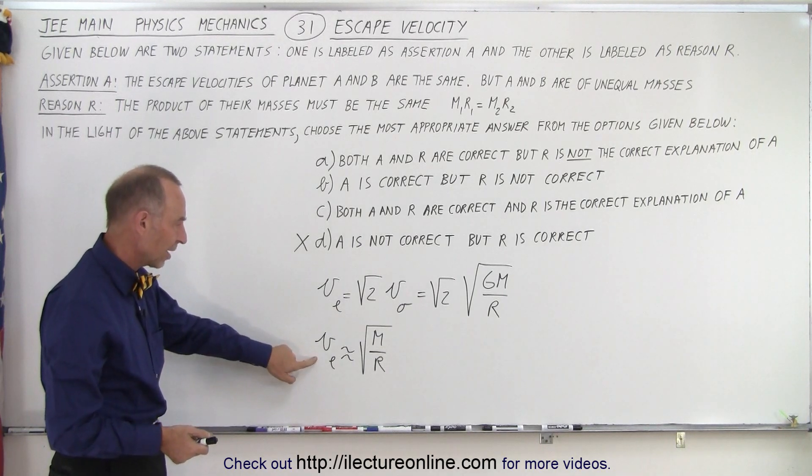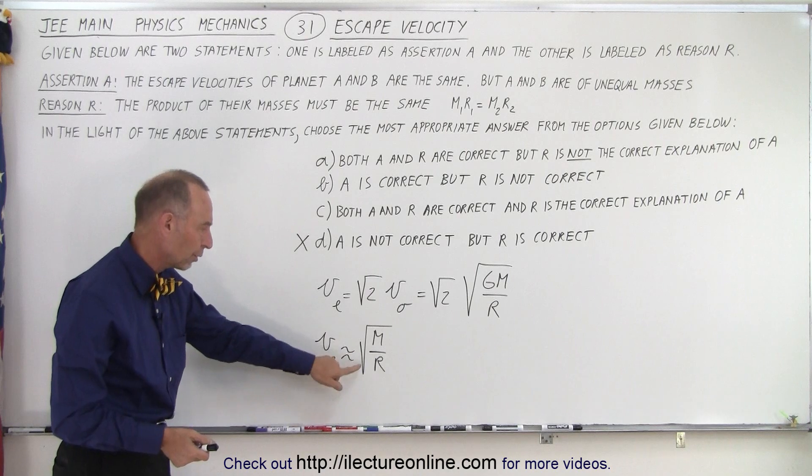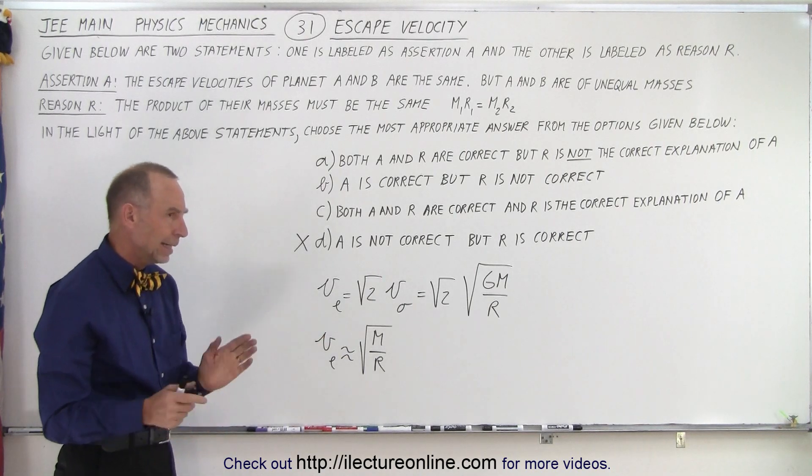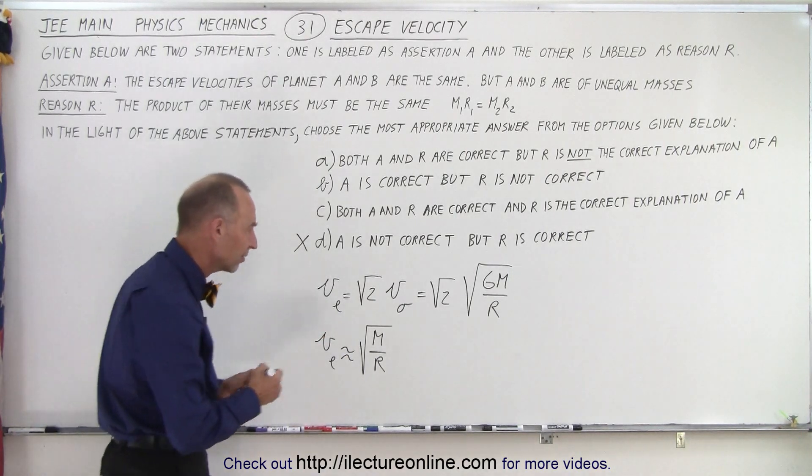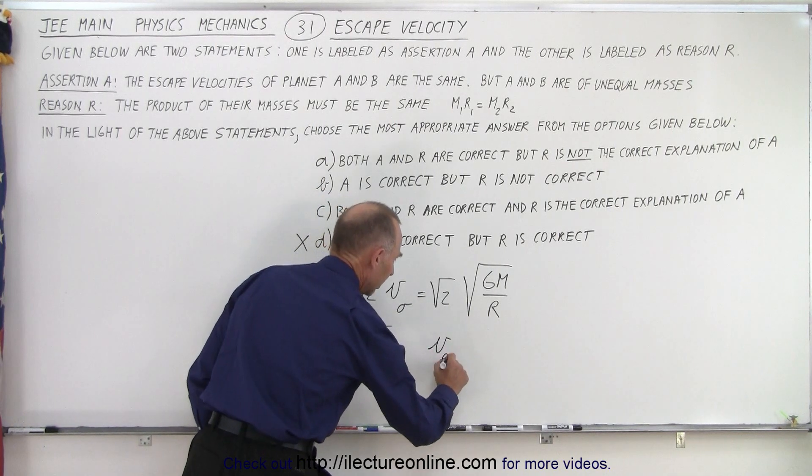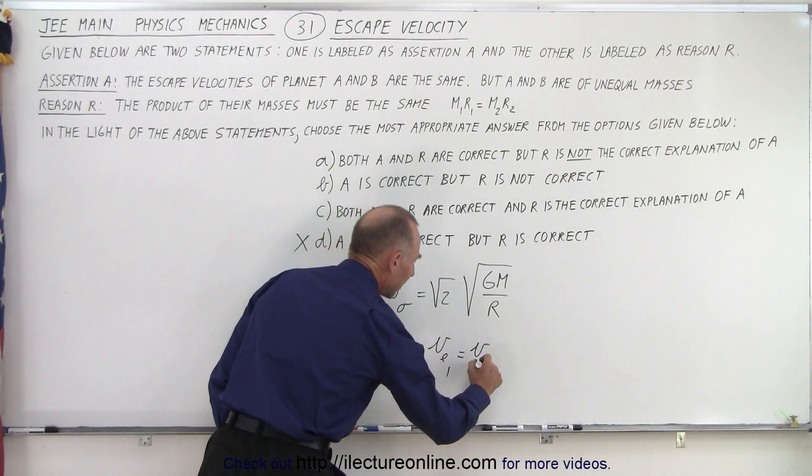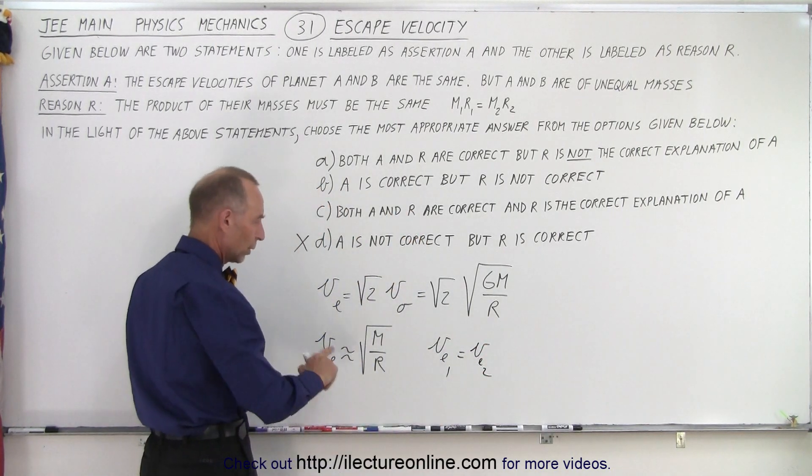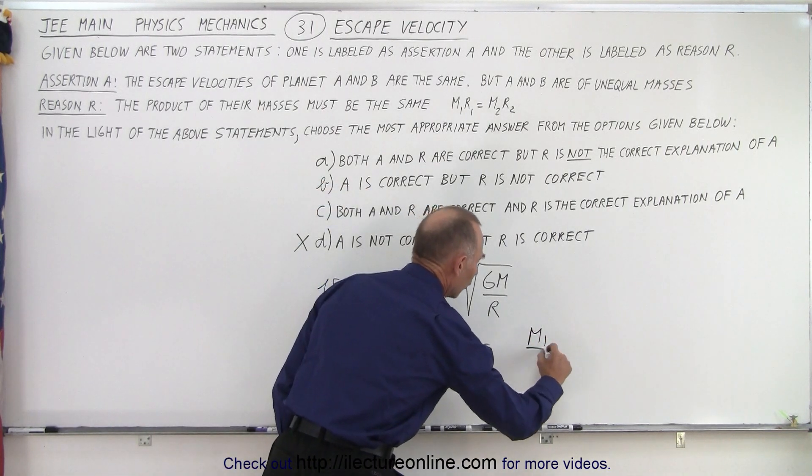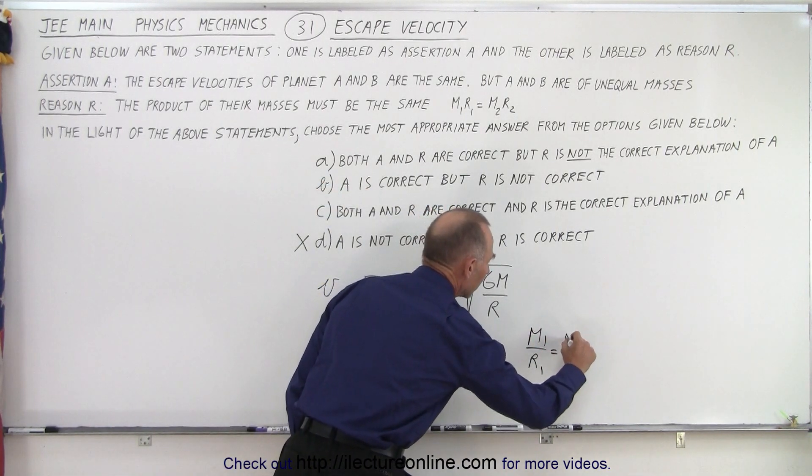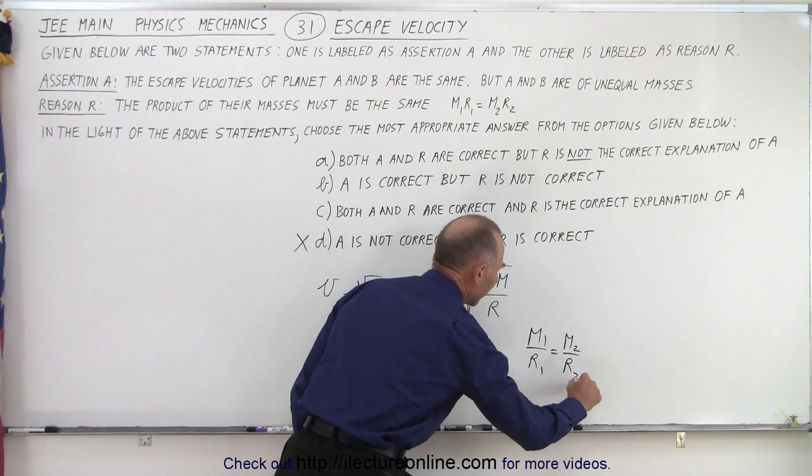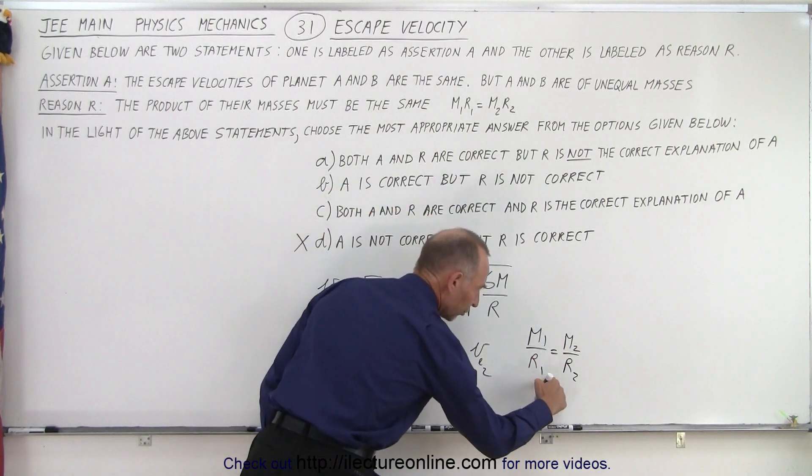But, wait a minute. We know that the escape velocity is proportional to the square root of M over R. If the escape velocity of planet 1 is going to be equal to the escape velocity of planet 2, what that means is that M1 over R1 must equal M2 over R2. For that to be true, this must be true.